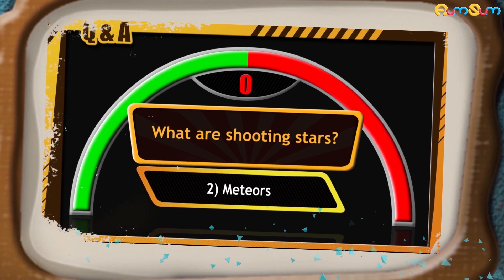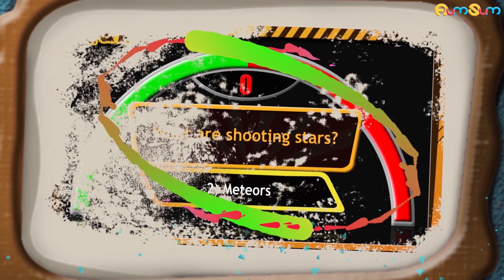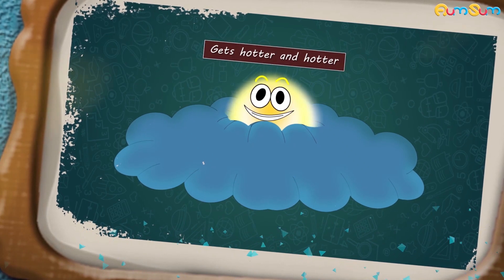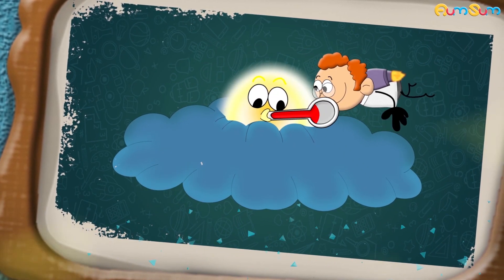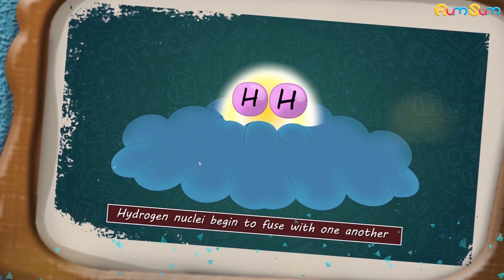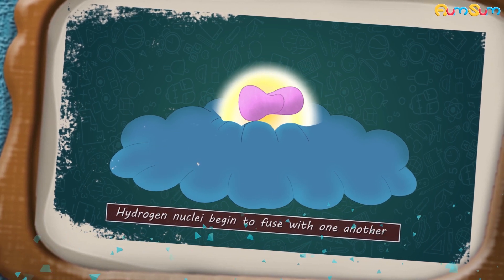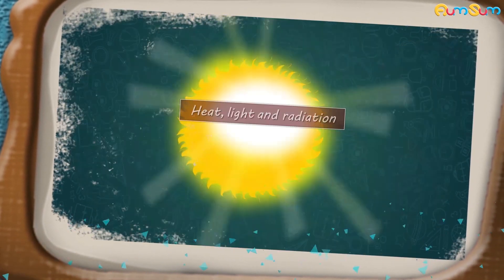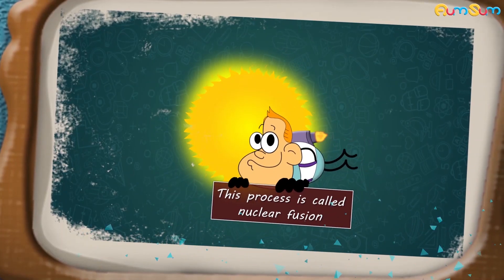Now, let's continue with our video. A protostar continues to pull more molecules and gets hotter and hotter, until the temperature and pressure reach to such an extent that hydrogen nuclei begin to fuse with one another, producing helium and releasing heat, light and radiation. This process is called nuclear fusion.